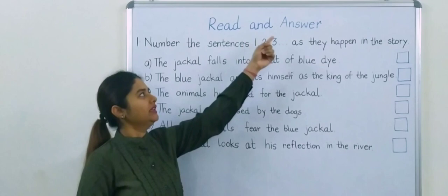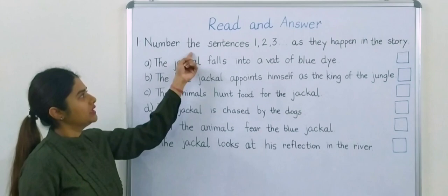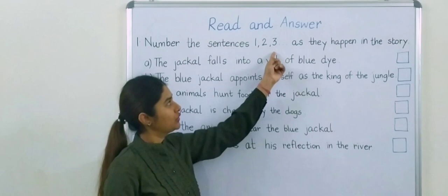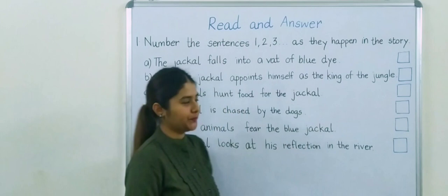Read and answer. Question number 1 is: number the sentences 1, 2, 3 as they happen in this story.